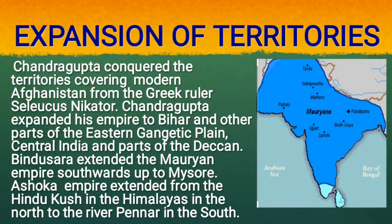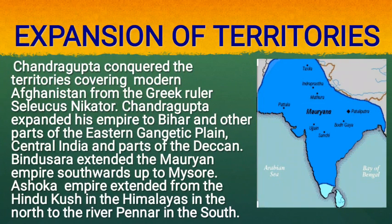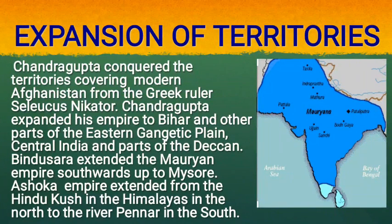Expansion of Territories: Chandragupta conquered territories covering modern Afghanistan from the Greek ruler Seleucus Nikator. He expanded his empire to Bihar and other parts of the Eastern Gangetic Plain, Central India and parts of the Deccan. Bindusara extended the Mauryan Empire southwards up to Mysore. Ashoka's empire extended roughly from the Hindu Kush in the Himalayas in the north to the river Penar in the south.